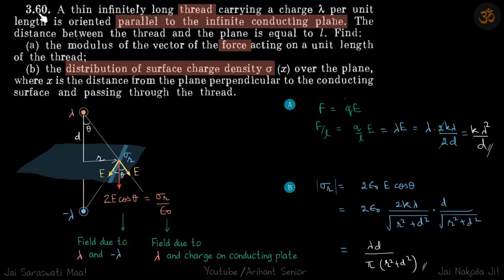The electric field due to this wire is E in this direction, and due to the other wire it's E here. The net field is 2E cos theta downwards, which is the field due to lambda and minus lambda. But minus lambda does not exist in reality - we have the sheet. The electric field just near the surface is sigma by epsilon naught.